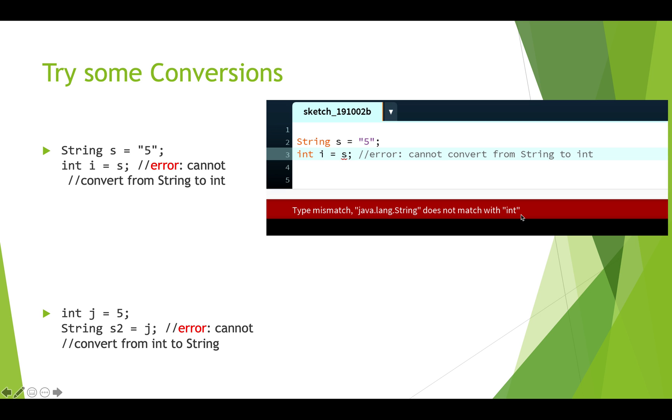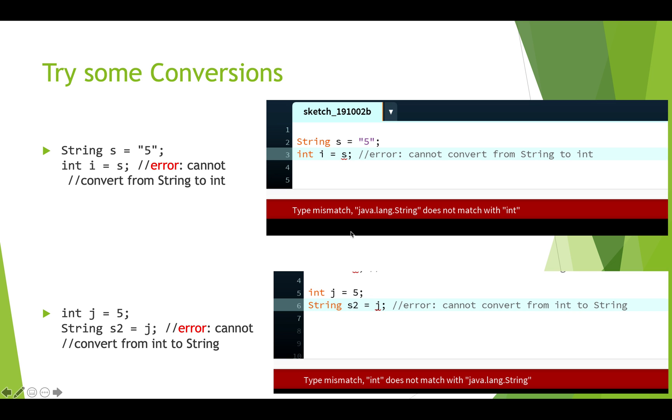And it doesn't work the other way around either, typically. So here we have int j and we're assigning it the number five because it's an integer. And then we're trying to take this int five and assign it to the string s2. Remember strings are these complex objects that have multiple different characters and so on. So saying we want five to be converted into that, Java doesn't quite know what to do with that. In this case we'll get a similar error when we're trying to do that kind of conversion.